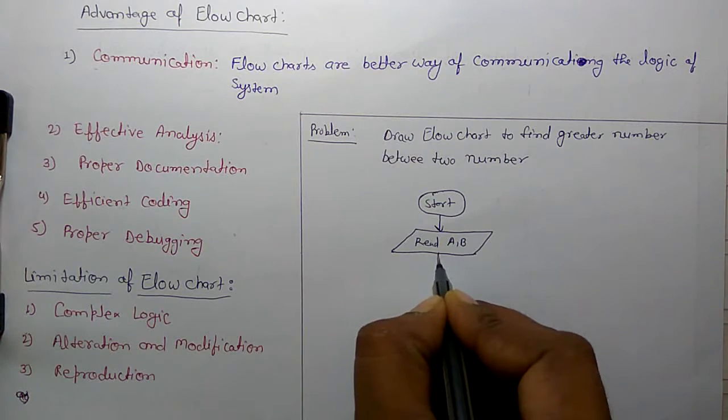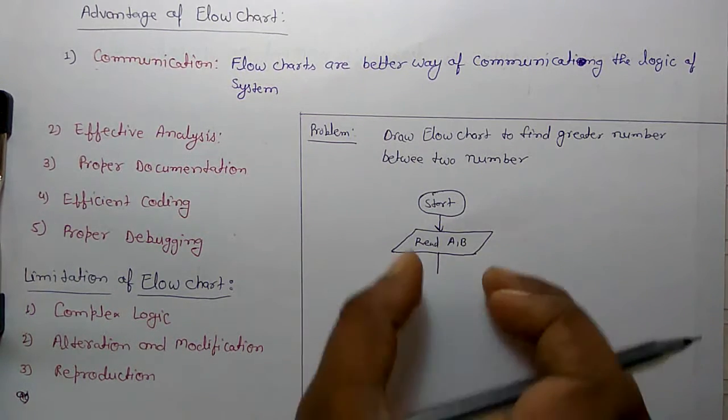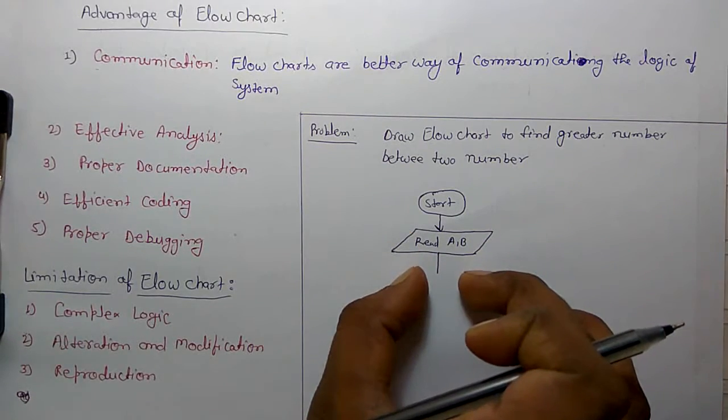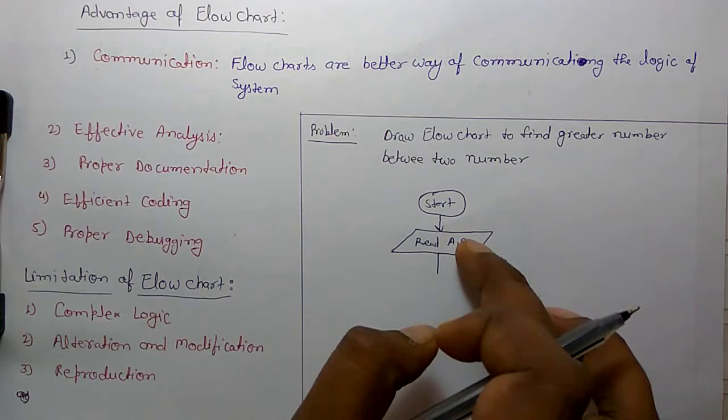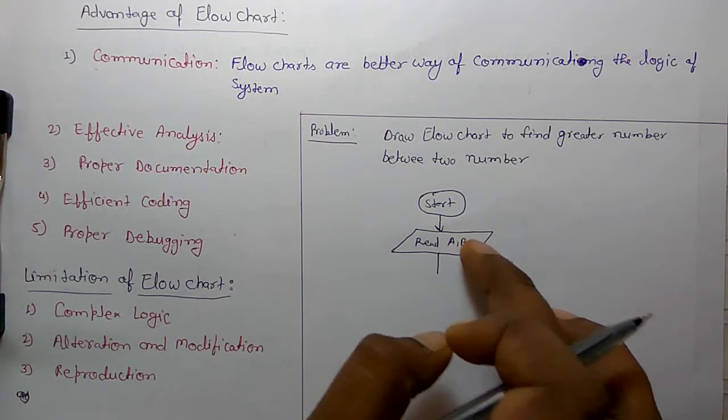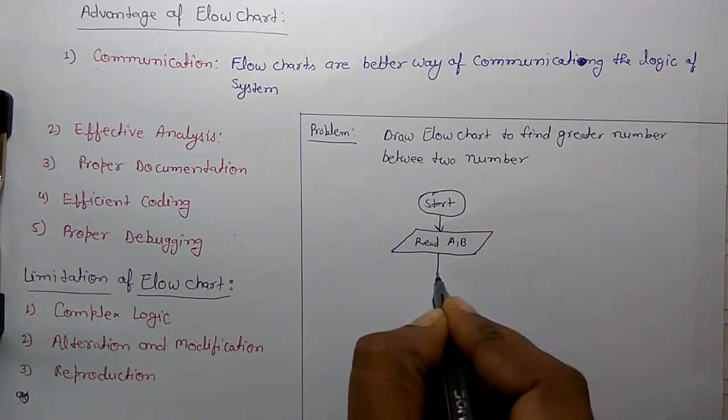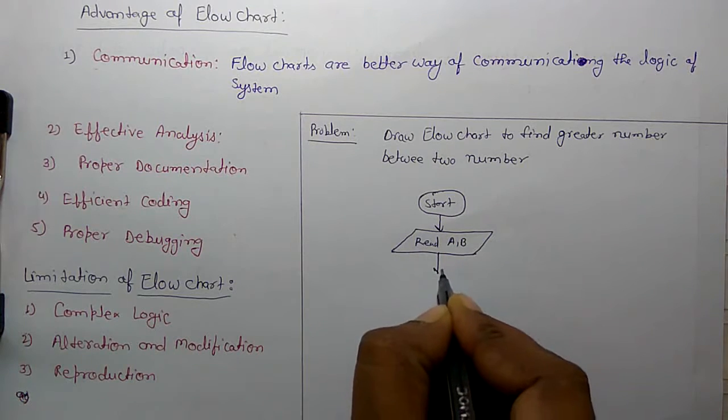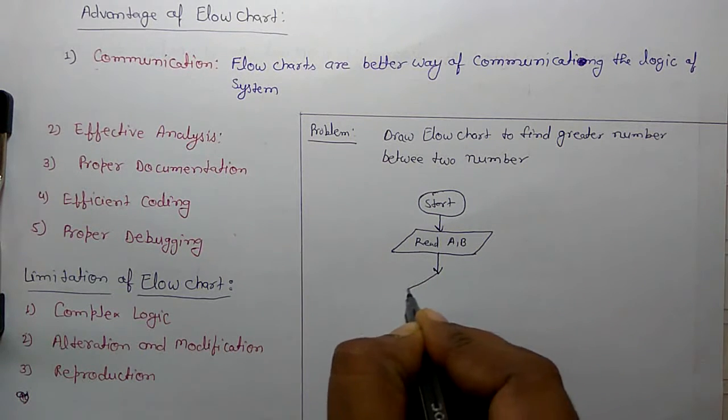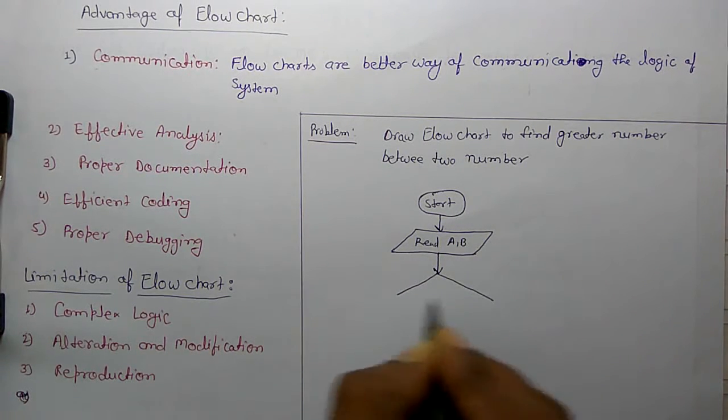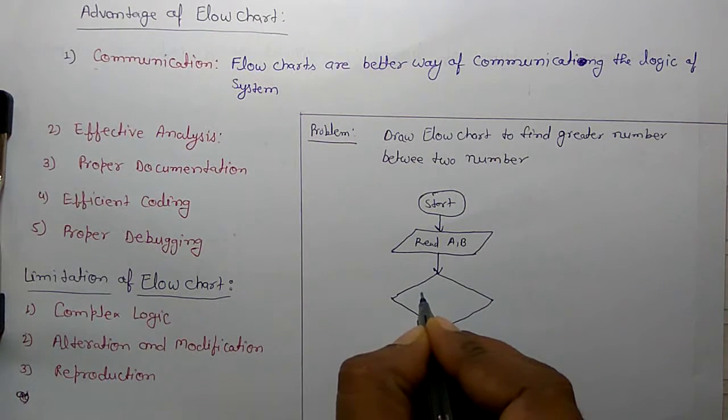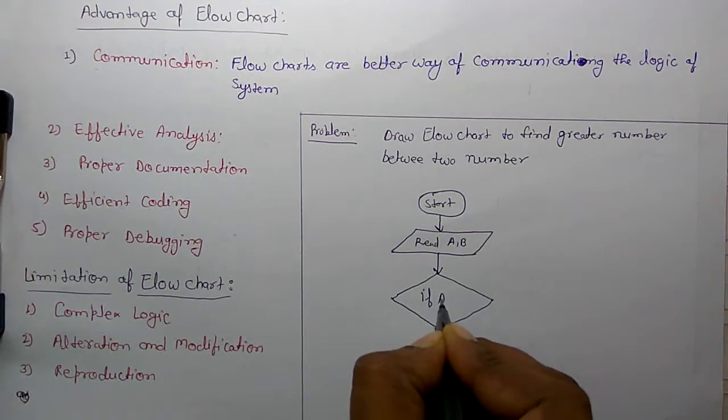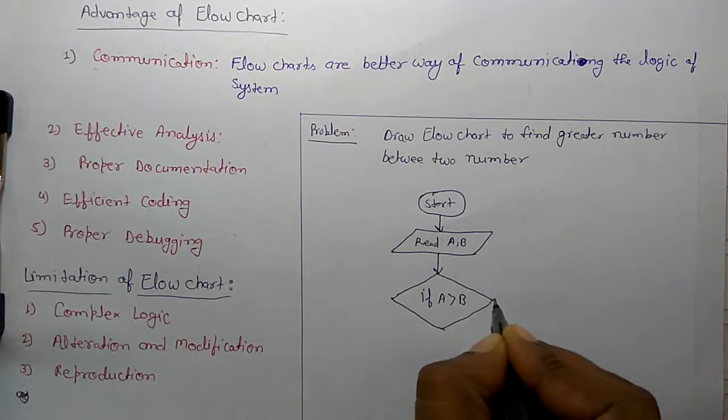Then can we use process? No, because now you have to compare these two inputs, which one is greater. So for this you have to use decision symbol, which is diamond symbol. If a greater than b.